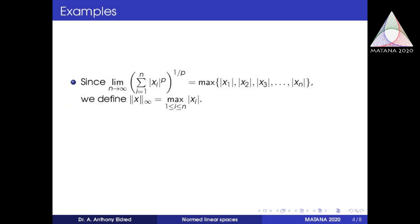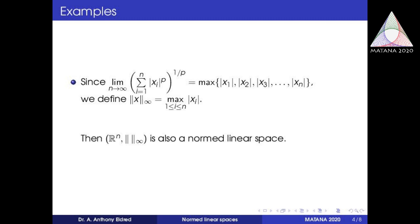We can also define the norm for p equal to infinity. If we take the limit as p tends to infinity of the p-norm — that is, the limit of the p-th root of summation i equal to 1 to n of modulus of xi to the power p — this limit equals the maximum of modulus of x1, modulus of x2, up to modulus of xn. So we define the infinity norm of x as maximum of modulus of xi, for 1 less than or equal to i less than or equal to n. R^n with this infinity norm is also a normed linear space.